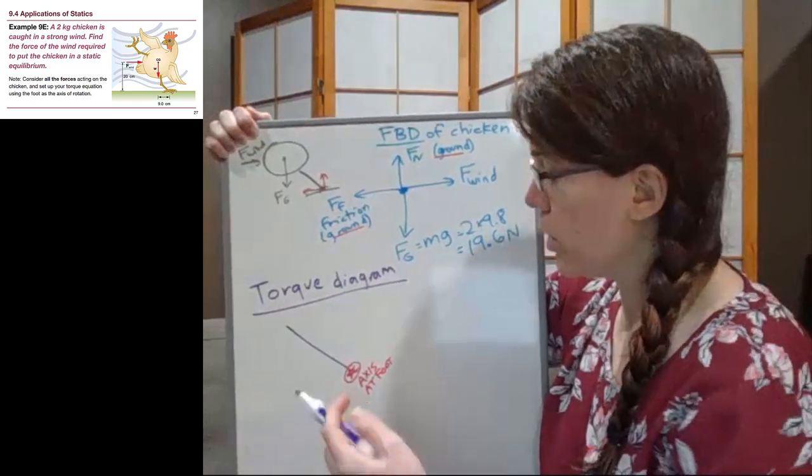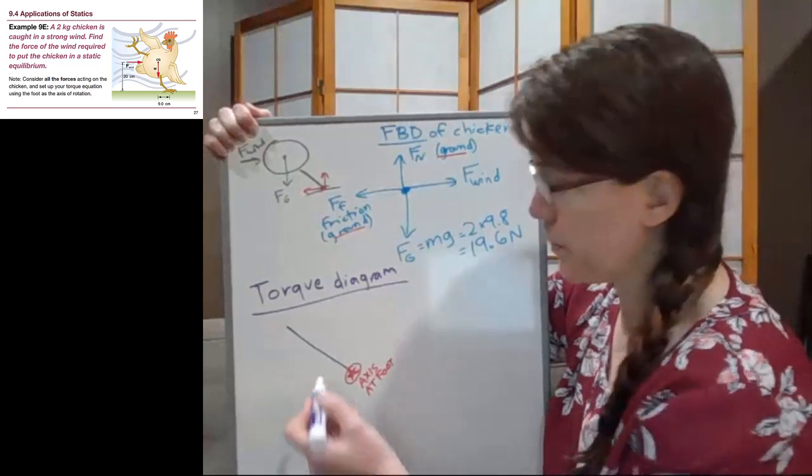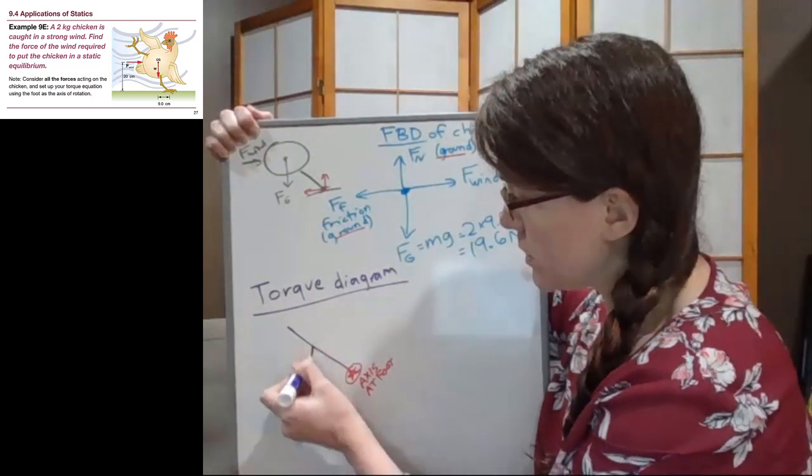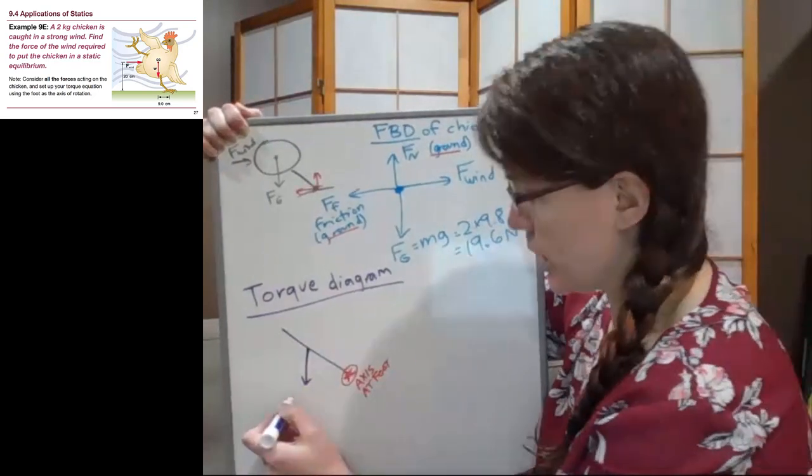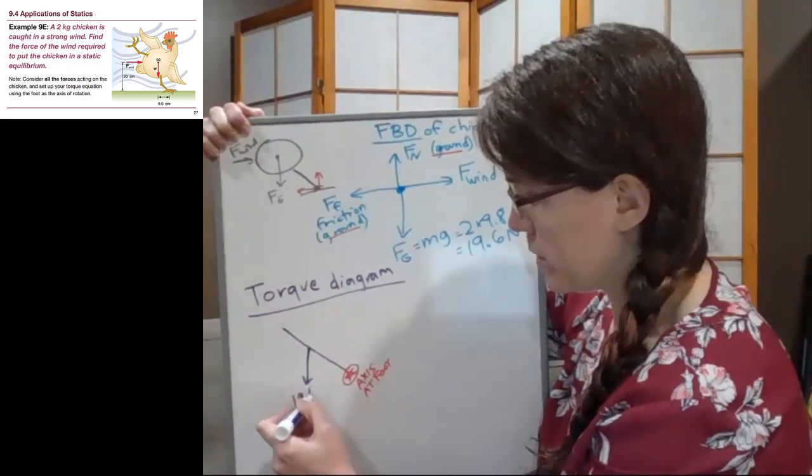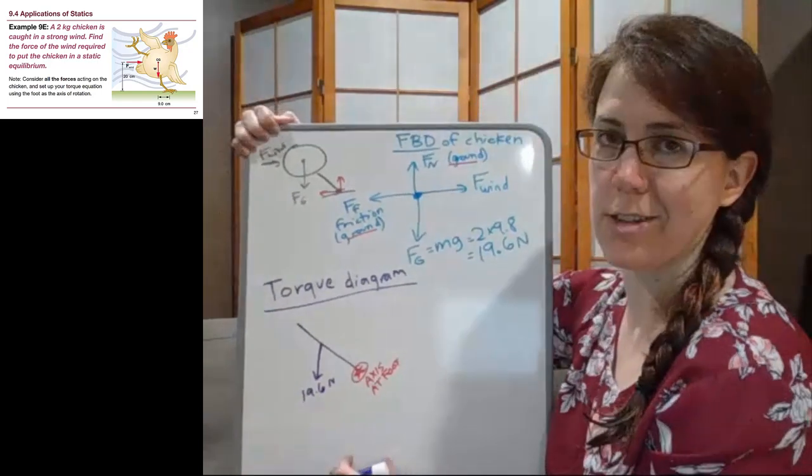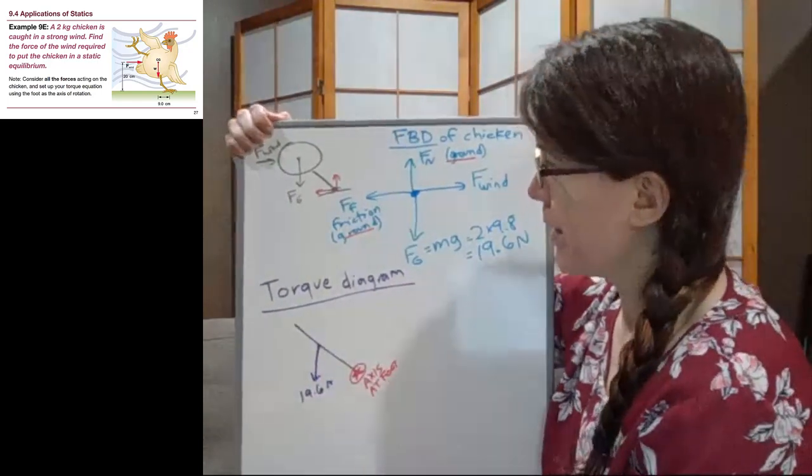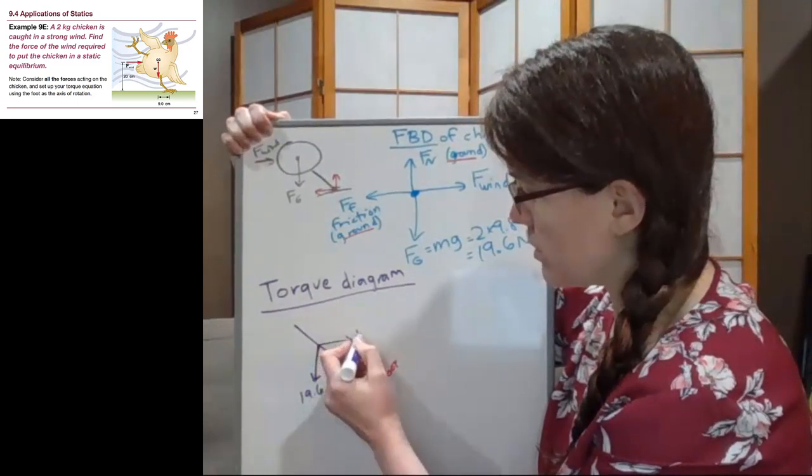Okay, so step one, the bar. Step two, the axis. Step three, the forces. So in this example we have the force of gravity of the chicken, 19.6 newtons acting straight down, that's as straight down as it's going to be for my sideways view, and the force of the wind acting directly sideways too.